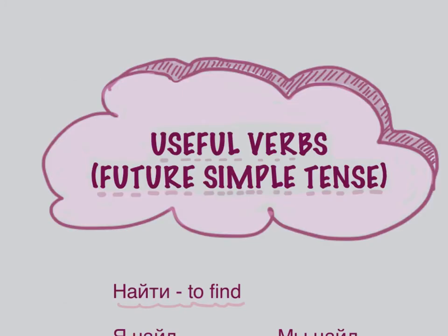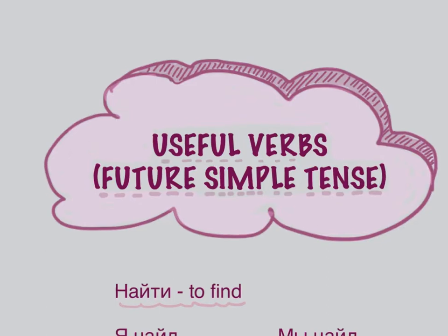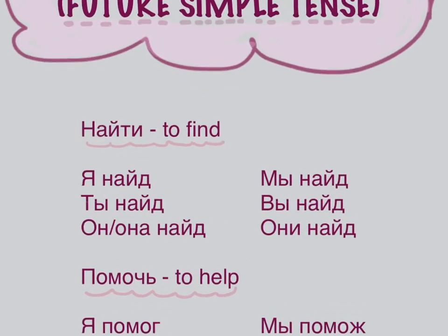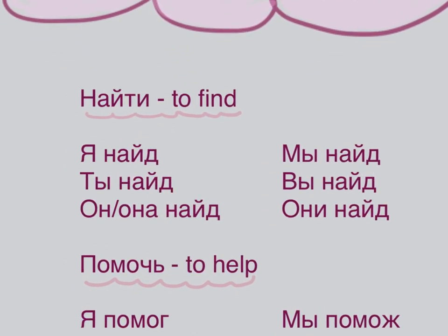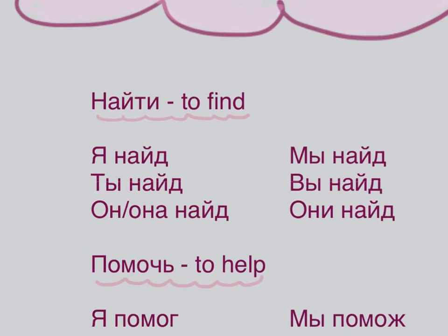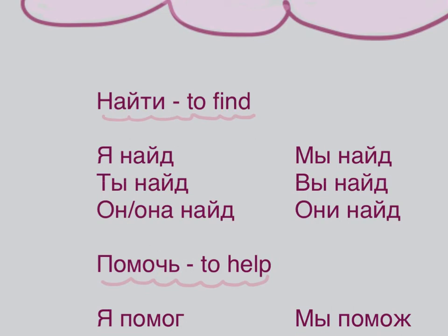Let's have a look at some verbs in context. The first one is НАЙТИ — to find. That's a perfective verb; all of these are perfective. Я НАЙДУ — I will find — stress on the last syllable. ТЫ НАЙДЁШЬ — this is the ЁШЬ type of verb. ОН/ОНА НАЙДЁТ — ЁТ. Remember, Ё is always stressed.